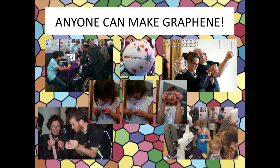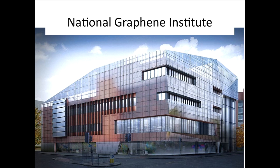But graphene is not something inaccessible — it's not something only scientists can do. One of the things I do is public engagement. I go around universities, schools, and science festivals with a microscope, a piece of sellotape, and some graphite, and I invite people in the audience to make their own graphene. At the Manchester Science Festival, for example, you can come and make your own graphene. Anybody can do it — even a nine-year-old girl can do it.